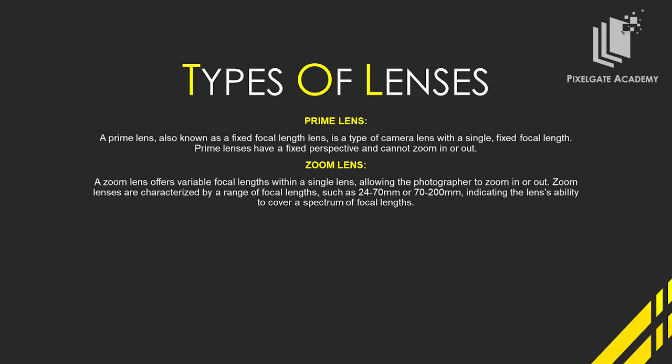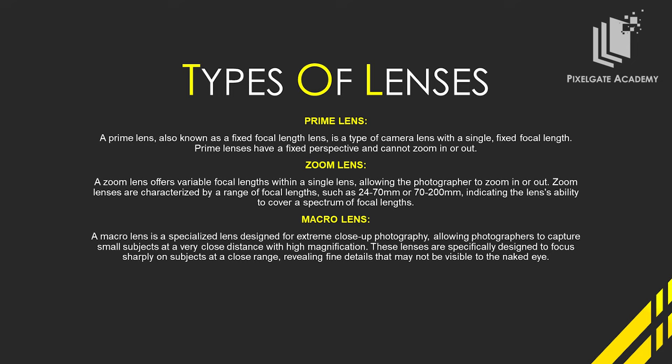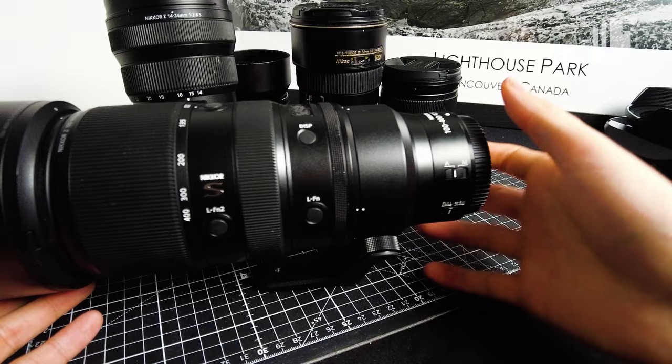Then we have macro lenses. A macro lens is a specialized lens designed for extremely close-up photography — for example, animals or flowers. These lenses are designed to focus sharply on subjects at close range, even displaying them at a one-to-one ratio or even higher. You can reveal fine details that may not be visible to the naked eye. You can also use them for normal photography, but they have their own look to them.